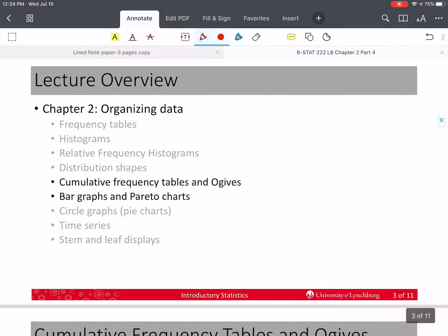Okay. So this time we're going to talk about a cumulative frequency table, and ogives go with that. We're also going to talk about bar graphs, which are used for qualitative data, and Pareto charts, which are a very special type of bar graph.